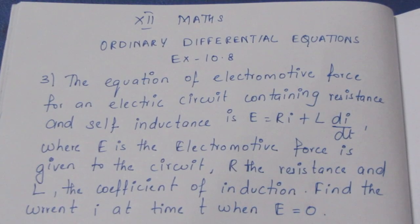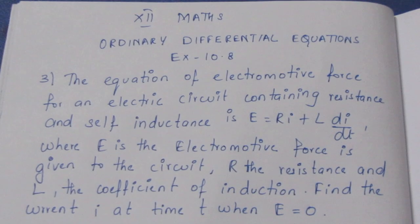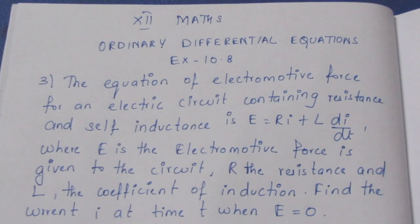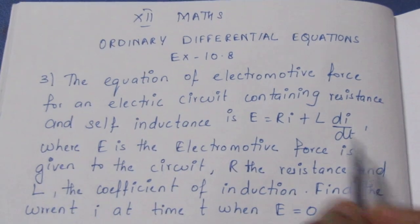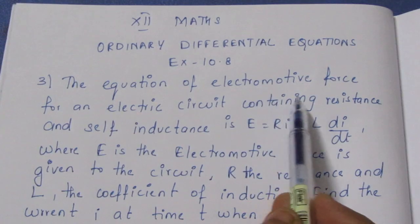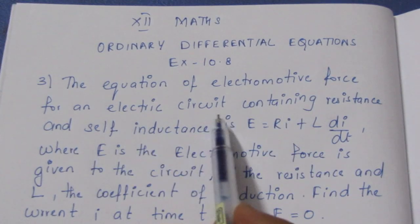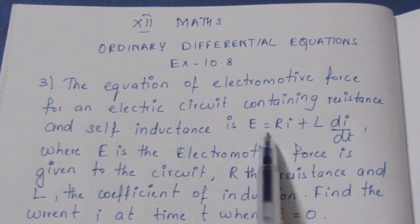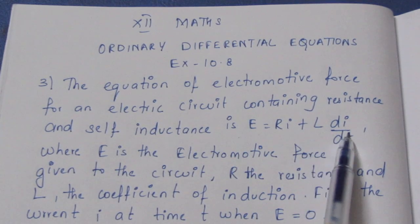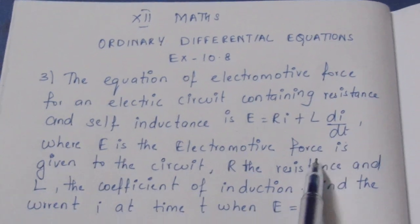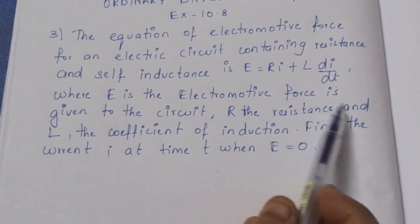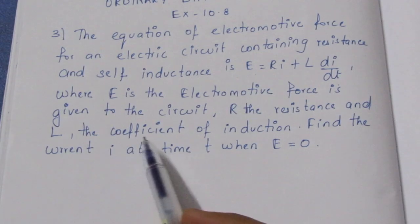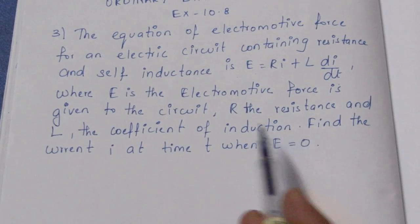Hello, I am Aitli. In the 12th Max Ordinary Differential Equation exercise 10.8, third sum, the equation of electromotive force for an electric circuit containing resistance and self inductance is E is equal to Ri plus L di by dt. Where E is the electromotive force given to the circuit, R is the resistance and L is the coefficient of induction. We need to find the current i.